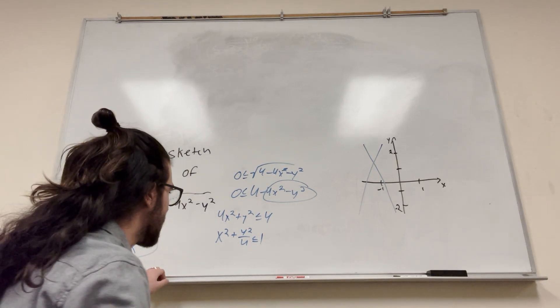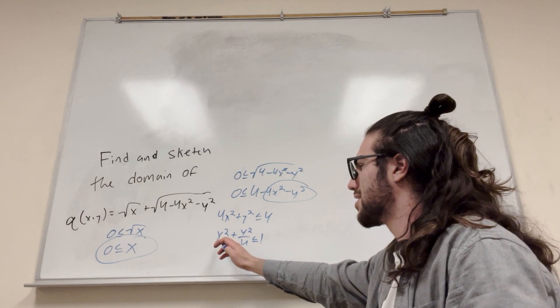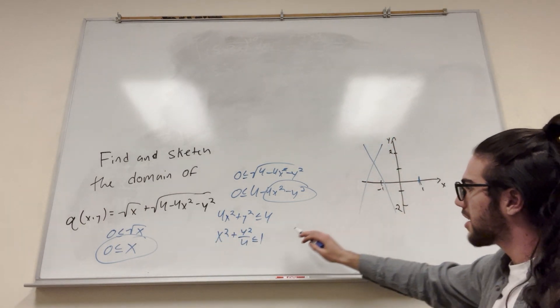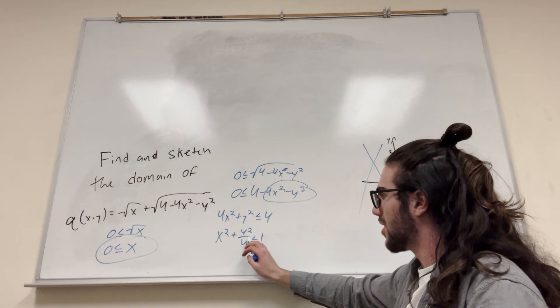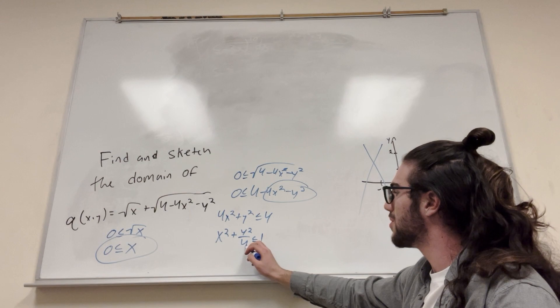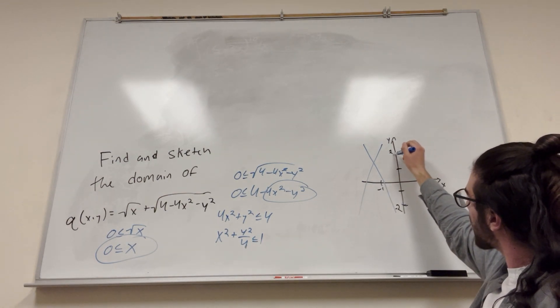Let's draw this. So what this tells us is that x has an intercept at 1 because the number under it is 1. So here. And then y has to have an intercept at 2 because it's under 4, which is the square root of 2. So it's going to be here and here. So our circle would look like this.